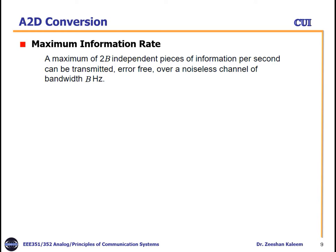An important result to remember is the maximum information rate: Nyquist states that a maximum of 2B independent pieces of information per second can be transmitted error-free over a noiseless channel of bandwidth B. This is the maximum rate — if bandwidth is B, you can transmit at most 2B information units per second without error. This condition will be used in future topics.